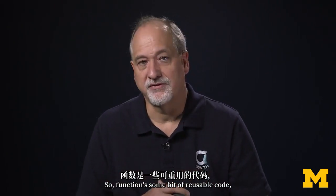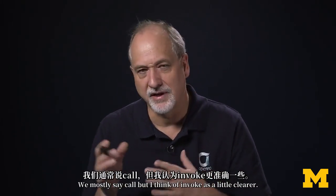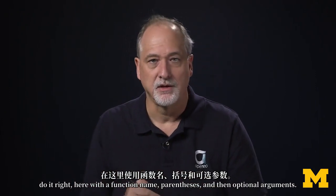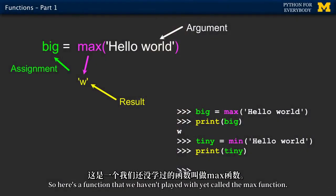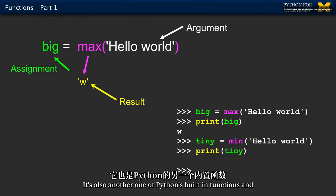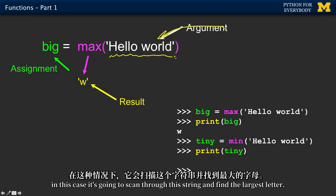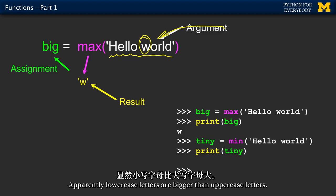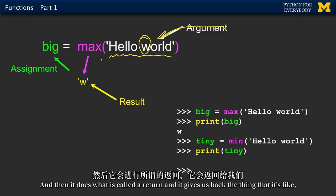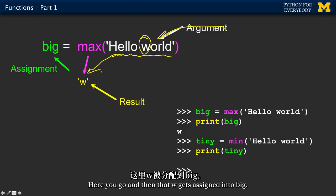So functions, some bit of reusable code. We define a function using the def keyword. And then we call or invoke. We mostly say call, but I think of invoke as a little clearer. It's like invoke this function. Like do it right here with function name parentheses and then optional arguments. So here's a function that we haven't played with yet called the max function. It's also another one of Python's built-in functions. And this is an example of an argument. We're passing in a string and max finds the largest of something. And in this case, it's going to scan through this string and find the largest letter. And it decides that w is the largest letter. Apparently lowercase letters are bigger than uppercase letters. And then it does what's called a return. And it gives us back the thing that it's like you asked me to find this. And now I found a w. Here you go. And then that w gets assigned in to big.